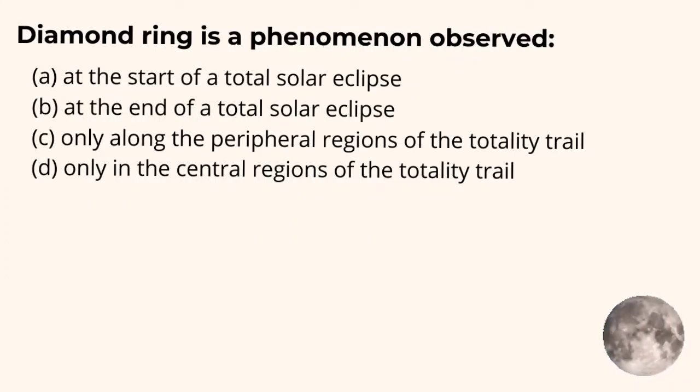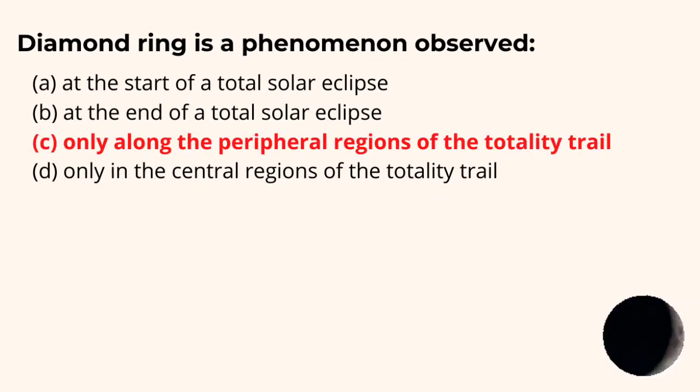But in the peripheral regions of the totality trail, where total solar eclipse has already occurred, in those peripheral regions, we will observe the diamond ring. So our answer will be C, only along the peripheral regions of the totality trail.